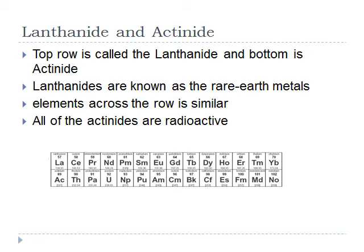Lastly, let's briefly talk about the bottom two rows of the periodic table. In your curriculum you rarely touch upon these, but it's not a bad idea to go through them briefly. The top row is called the lanthanides, also known as the rare earth metals. The bottom row is called the actinides, and all of the actinides are considered radioactive.